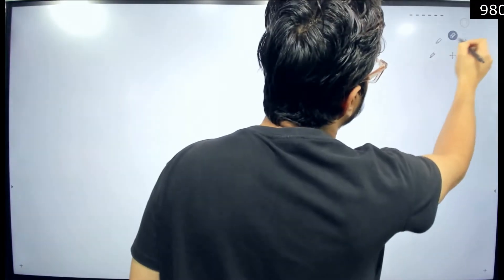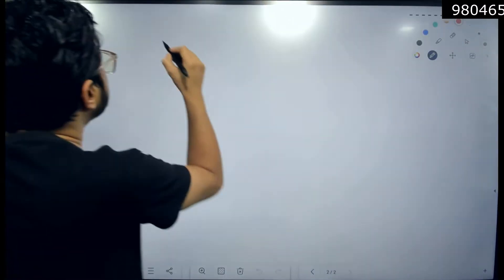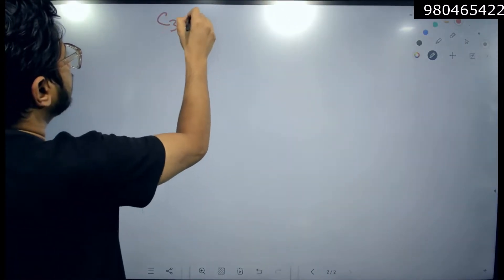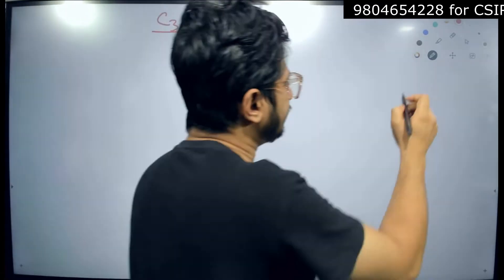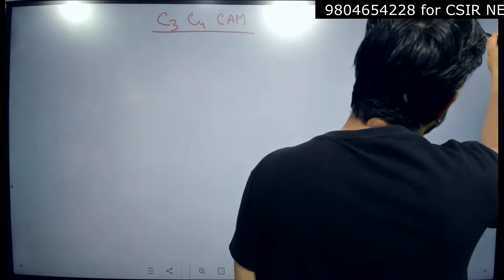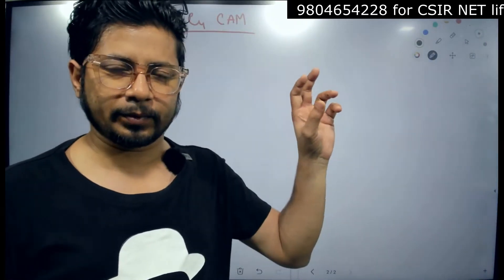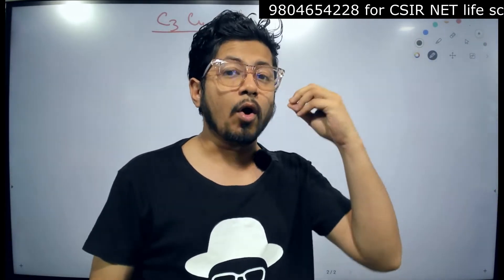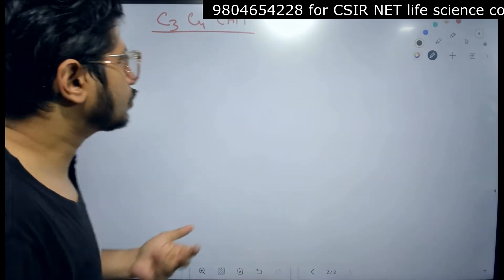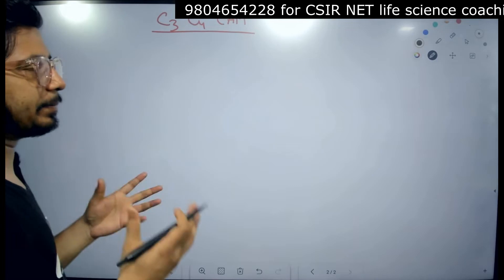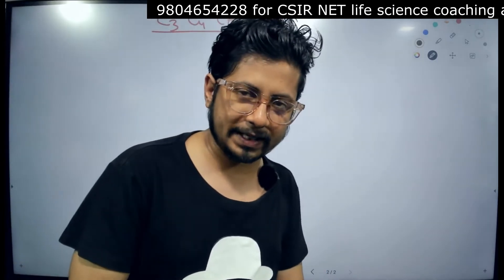I will take a board here for you and explain this. This is nothing but the difference between C3, C4 and CAM plants. This is super important because CSIR NET has asked a question from C3, C4, CAM plants in almost every single CSIR NET examination if you study the question paper. So what we need to understand is the primary difference between C3, C4 and CAM plants.